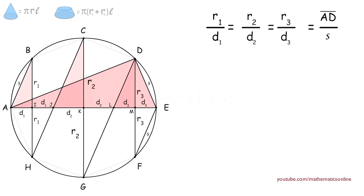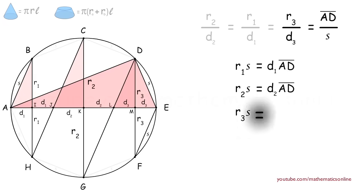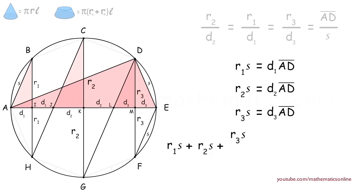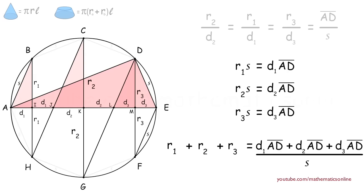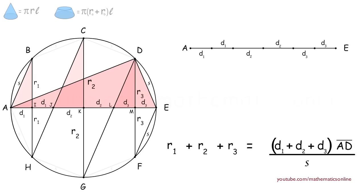Next, we will cross-multiply each of these terms, so we have R1·S = D1·AD, R2·S = D2·AD, and R3·S = D3·AD. We will add these equations together, giving us R1S + R2S + R3S = D1·AD + D2·AD + D3·AD. On the left-hand side, we can factor out and divide by S. On the right-hand side, we factor out line AD. So let's take a look at what D1 + D2 + D3 actually represents.